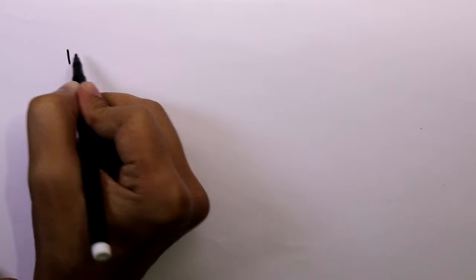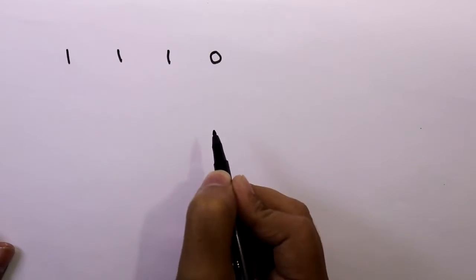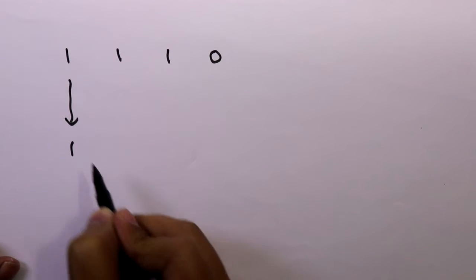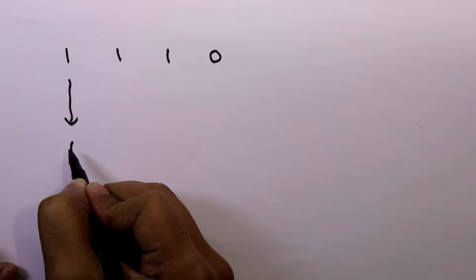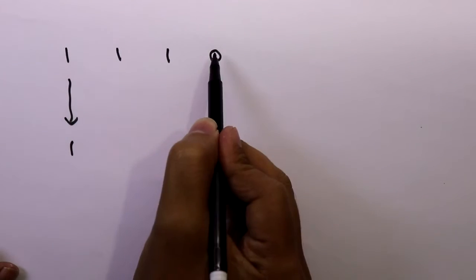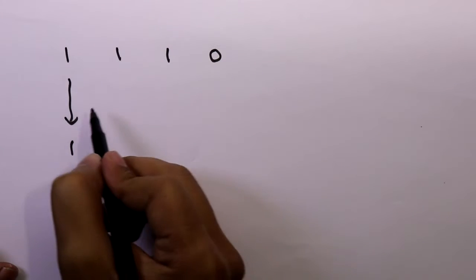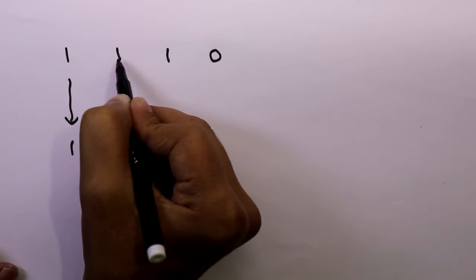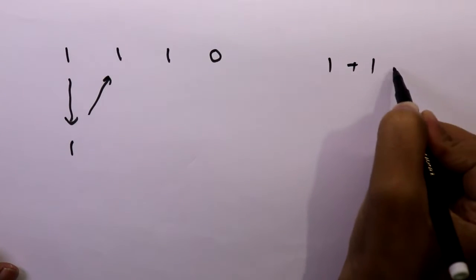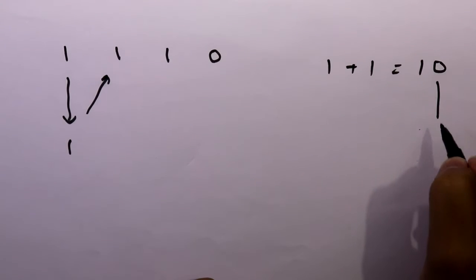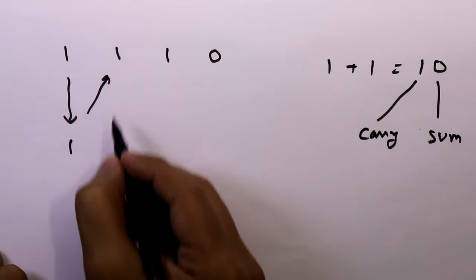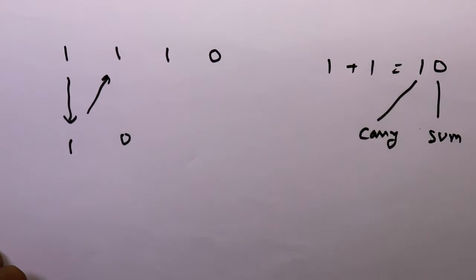Let's take a gray code number 1110. Now to convert it to binary code, we have to write its MSB as it is. Then we have to add its output to the next bit of the input. These are the inputs and these are the outputs. If we add this 1 with this 1, we write its sum. 1 plus 1 equals 10, so 0 is our sum and 1 is our carry.